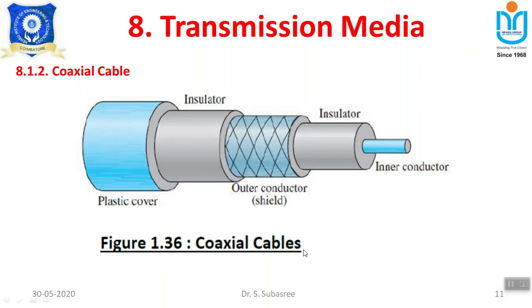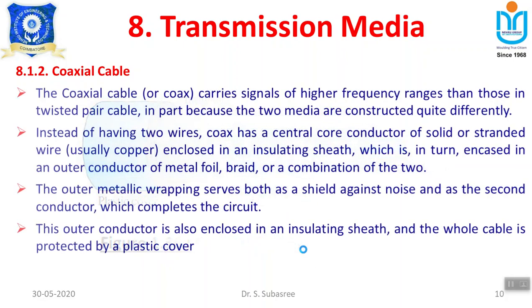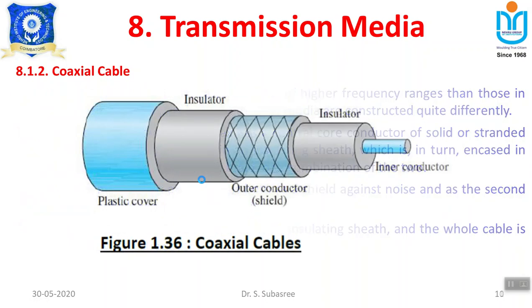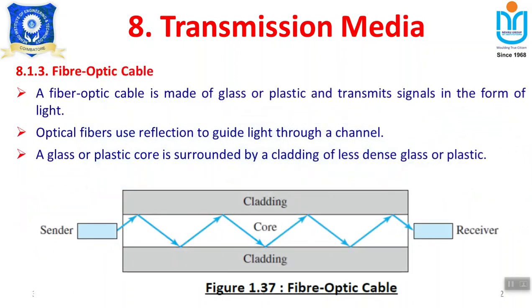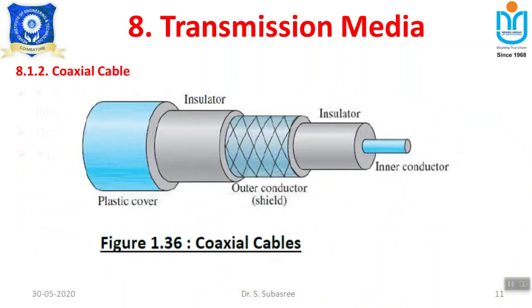Inside the coaxial cable, you have a plastic cover, then an insulator, then an outer conductor which shields the cable, and another insulator — two insulators — protecting against outside noise and interference. That is the advantage of coaxial cable, which is why it has a higher transmission capacity and can carry higher frequency signals compared to twisted pair cable.